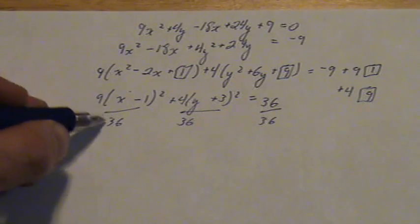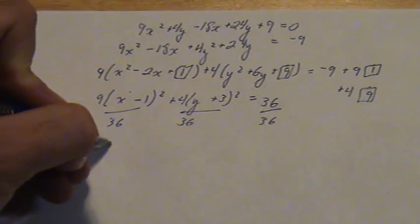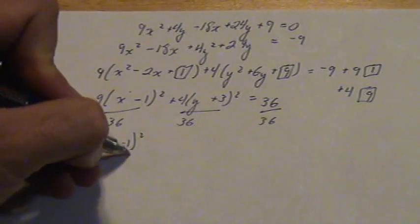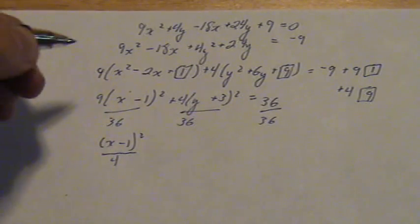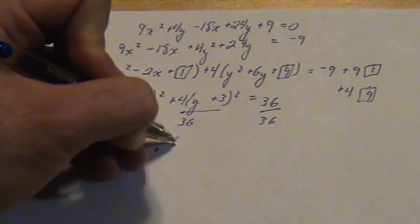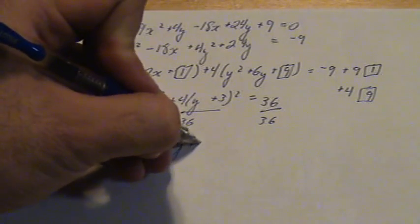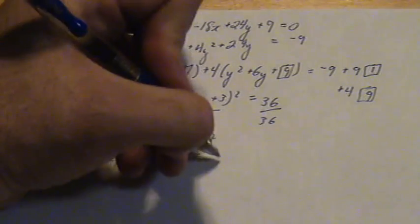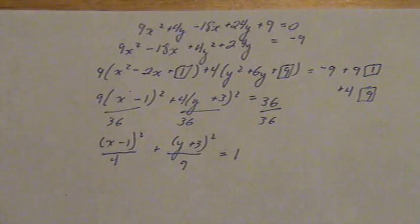When we do that, the 9 goes into 36 4 times, giving us x minus 1 squared over 4 plus y plus 3 squared over 9 equals 1.